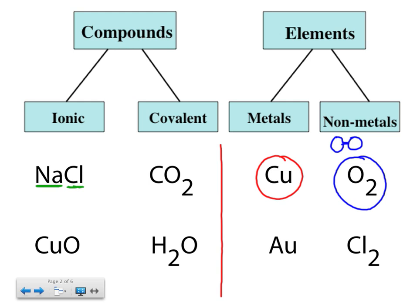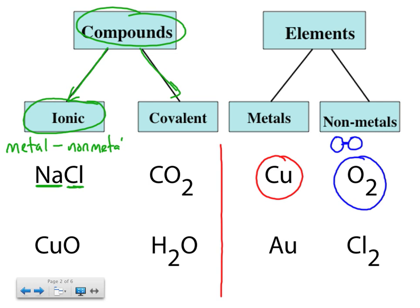Once you've worked out that something is a compound, you want to ask yourself: am I looking at an ionic or a covalent compound? If it's ionic, remember, it is a metal bonded with a non-metal. And they actually aren't atoms now — they become ions. They are charged particles, hence the reason we call it ionic.